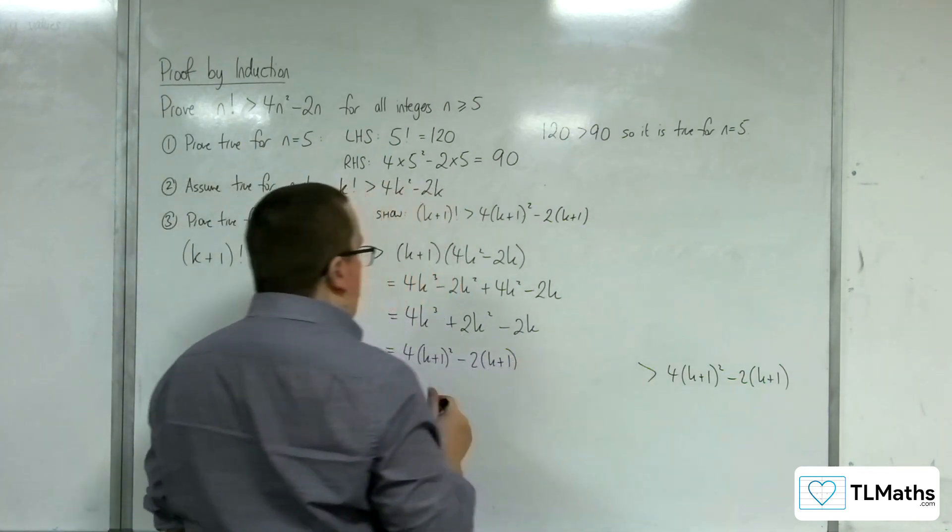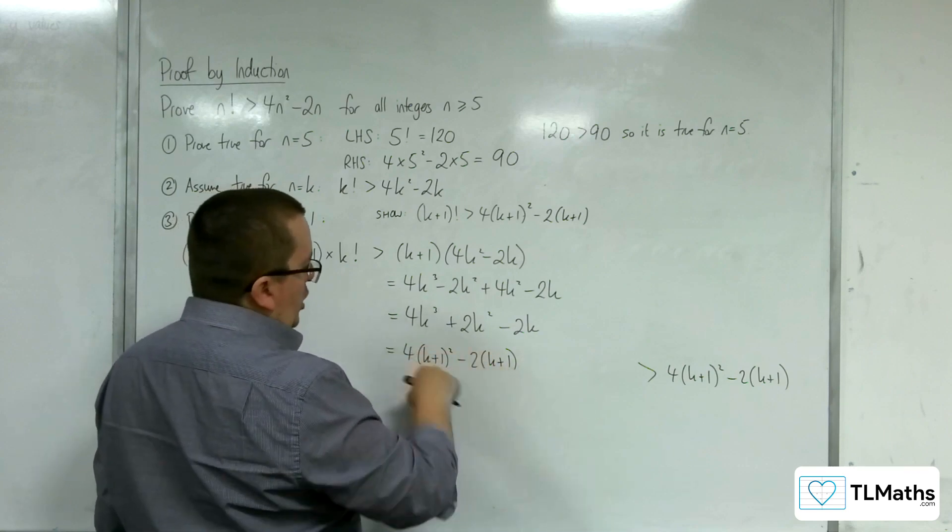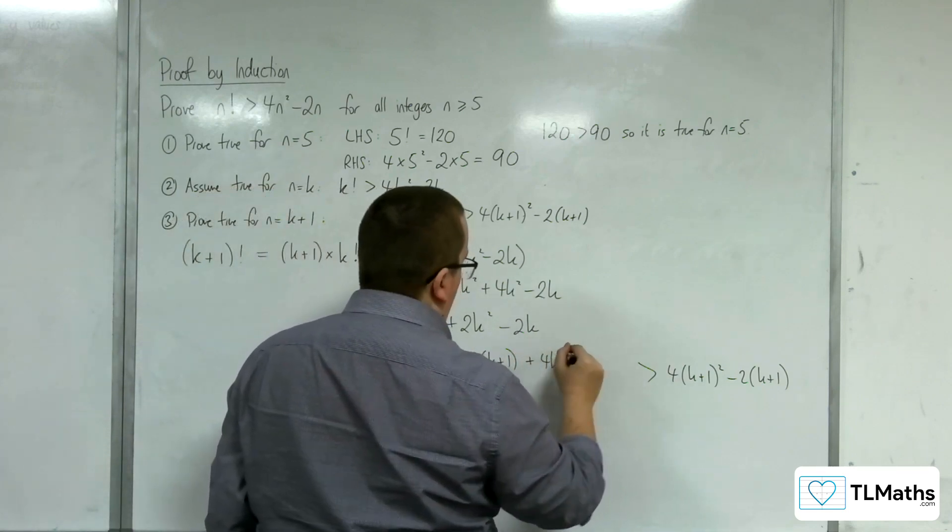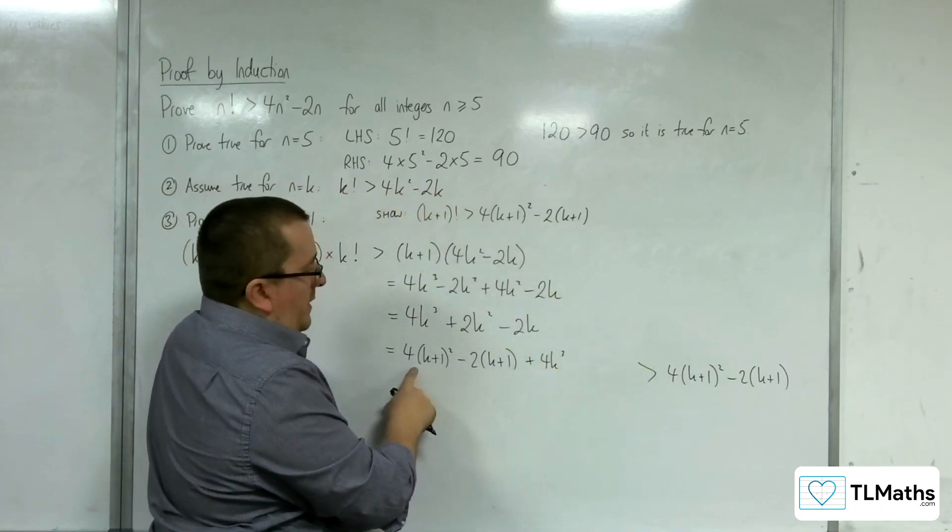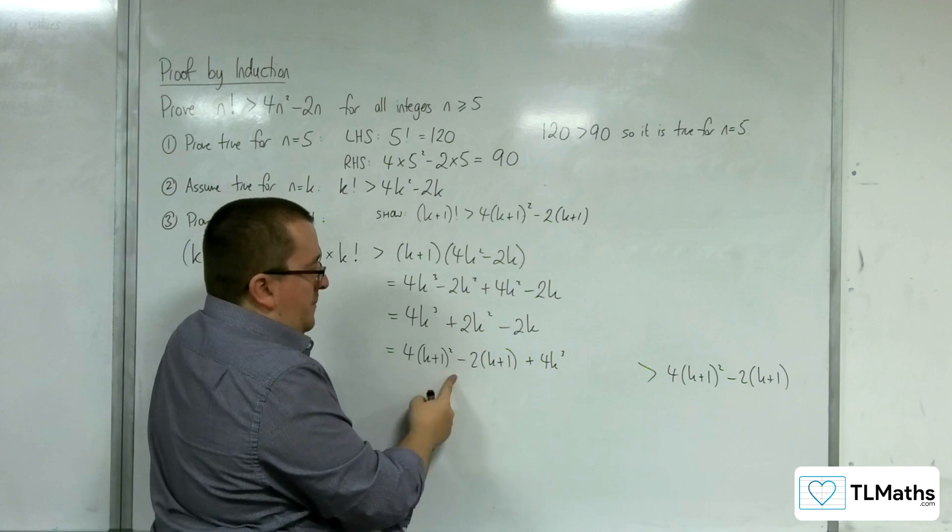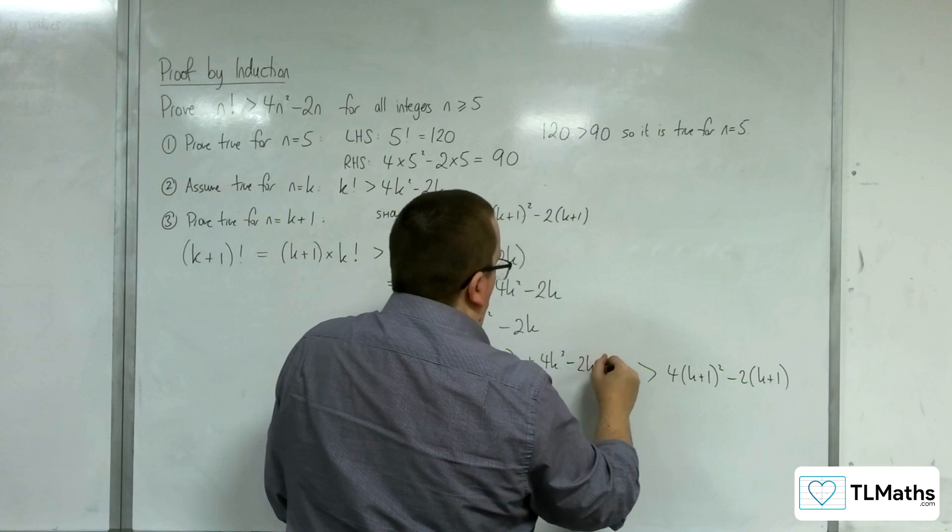So what needs to go here? Well I don't get a 4k cubed from any term there, so I'm going to have to have this extra 4k cubed. When I multiply this out, I'm going to get a 4k squared, but I've only got 2k squared there, so I'm going to have to take away 2k squared.